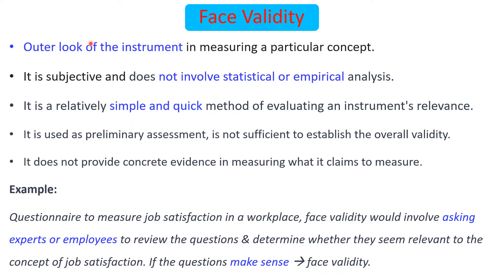To assess the validity of a measurement, we use one or more of the following approaches. The first is face validity — the outer look or appearance of an instrument in measuring a particular concept. It is subjective and does not involve statistical or empirical analysis; it is simply the opinion or perception of respondents on the instrument. It is a relatively simple and quick method used as a preliminary assessment when developing an instrument, but it is not sufficient to establish overall validity.